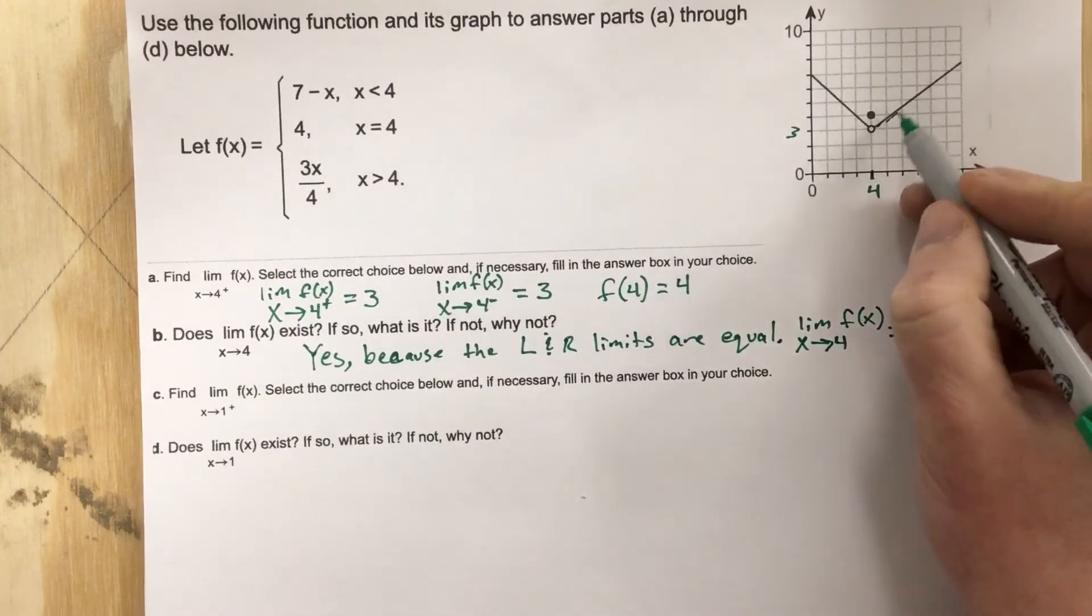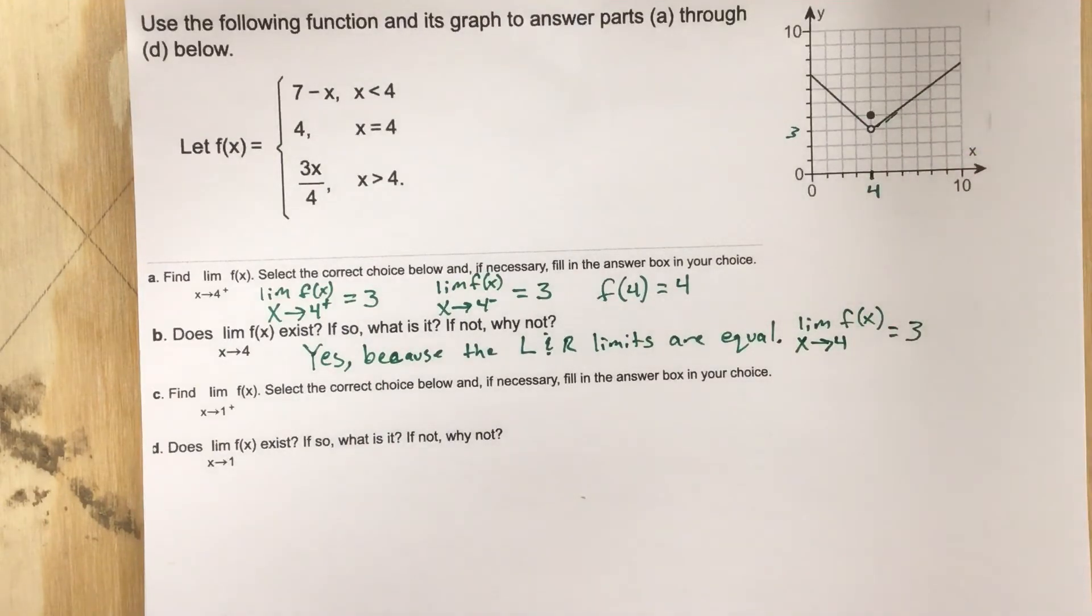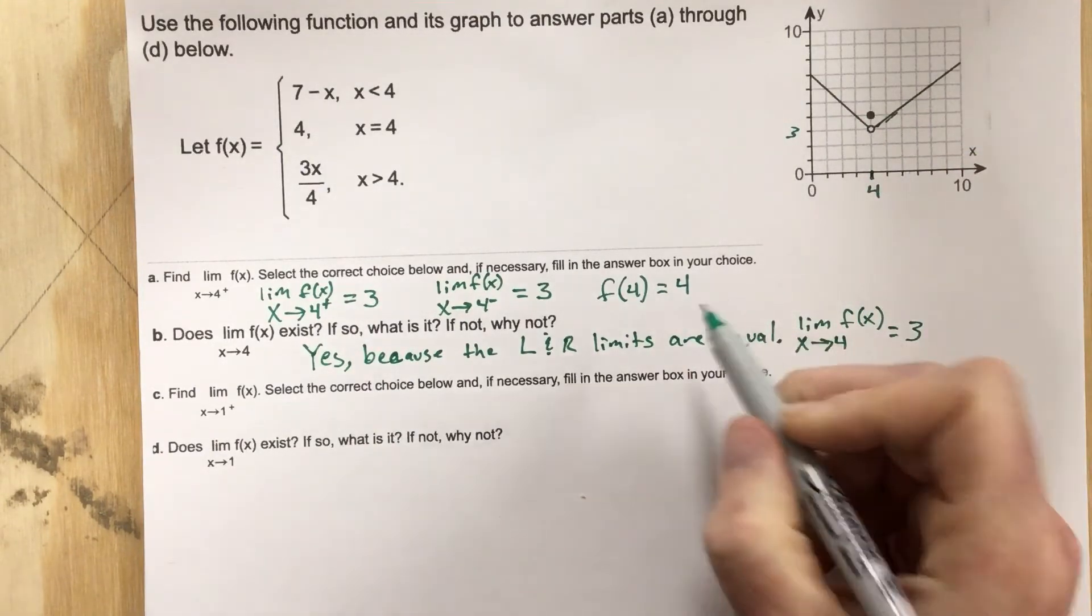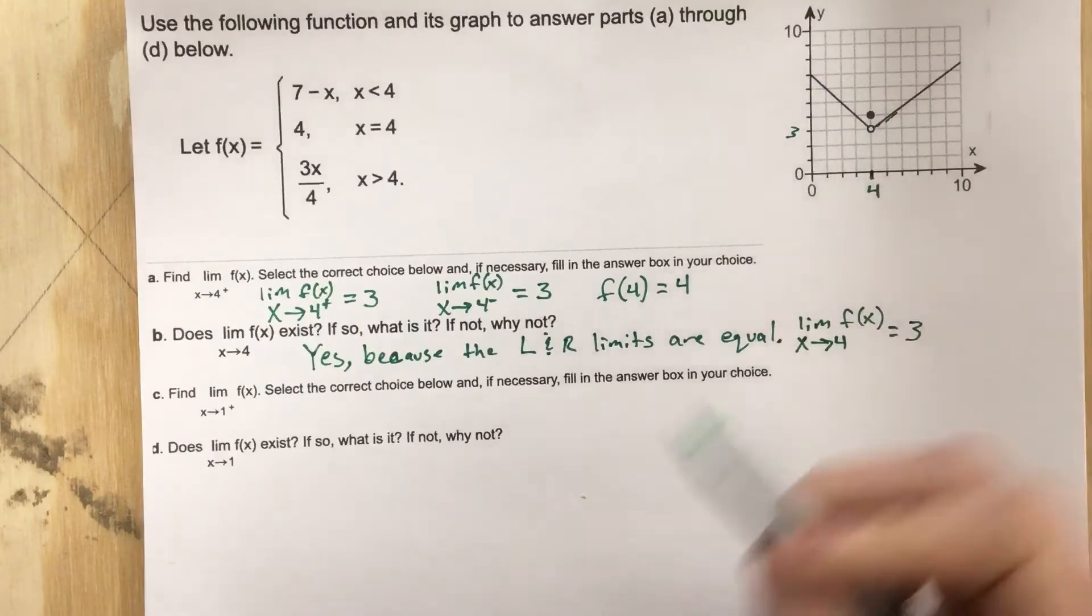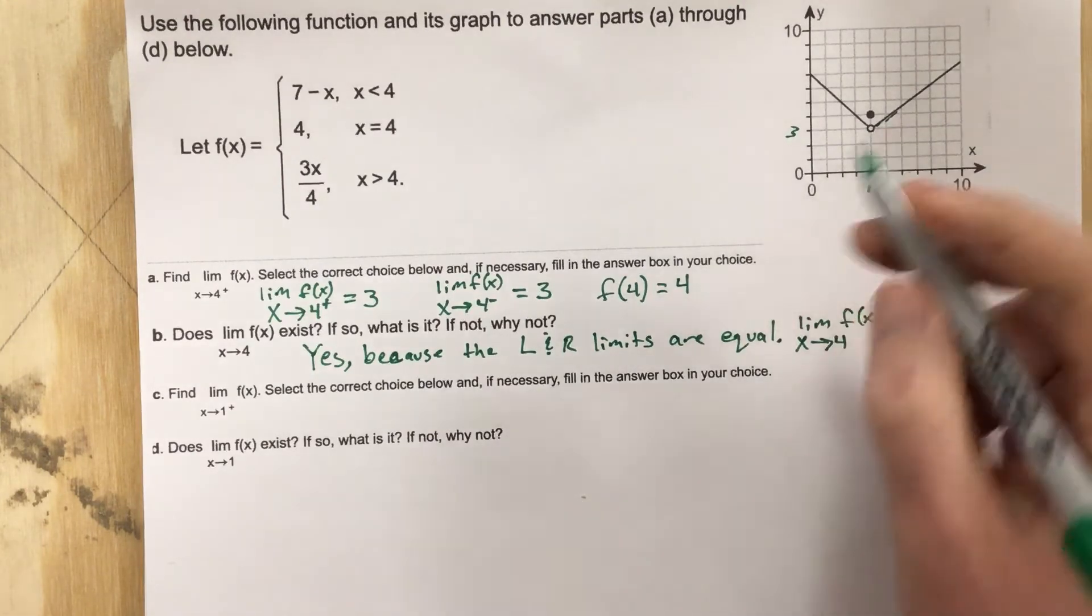So as we approach 4, the limit is 3. Although it's defined at 4, the limit is 3 because that's what we're approaching. We're approaching that y value of 3 as we get closer and closer and closer to this x value.